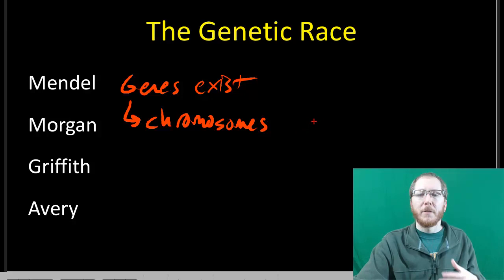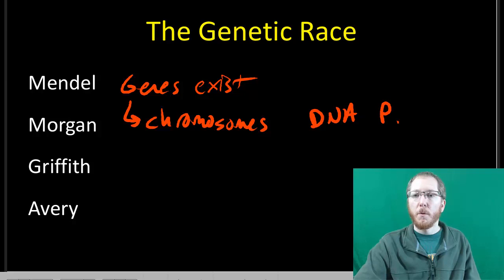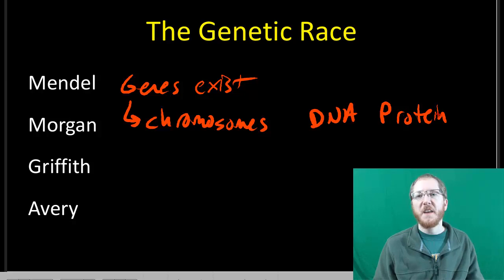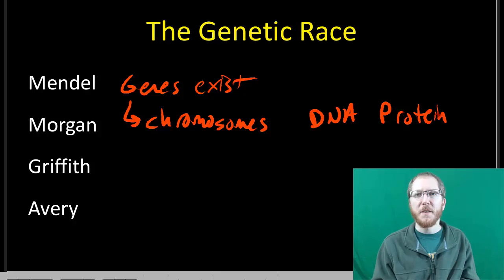At this point, we knew that chromosomes were about 60-40 in terms of DNA and protein. So there were two big candidates, and both were on pretty equal footing. Although most people initially really favored the protein, because there's 20 different amino acids versus four types of nucleotides. Most people thought 20 letters is better than four for coding life.